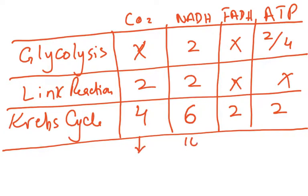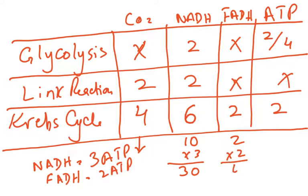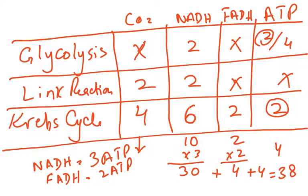Looking at the totals: we have six CO₂ overall, and ten NADH in total. Every NADH gives three ATP, so ten times three gives 30 ATP. Every FADH gives two ATP, so two times two gives four ATP. Plus the net four ATPs from glycolysis and Krebs cycle substrate-level phosphorylation — so 30 plus four plus four gives 38 ATP molecules total.